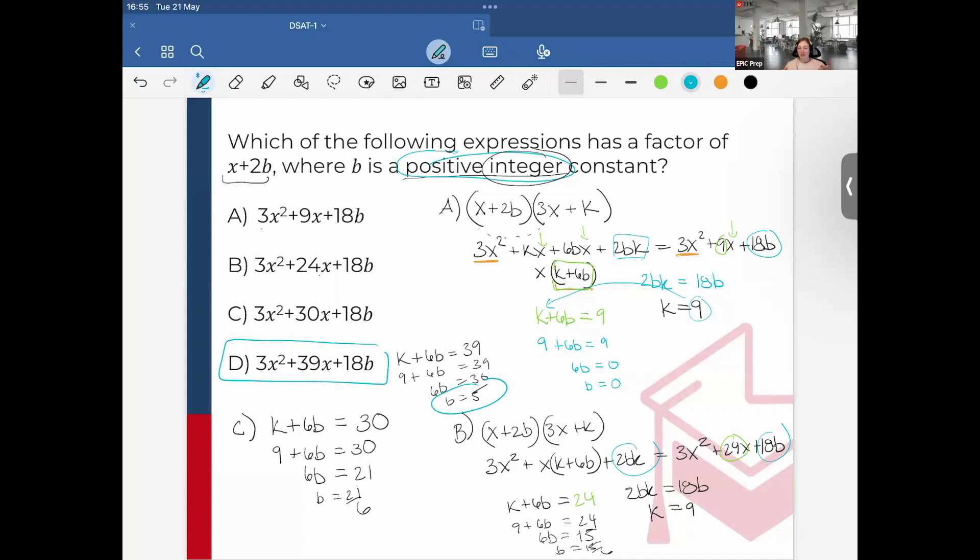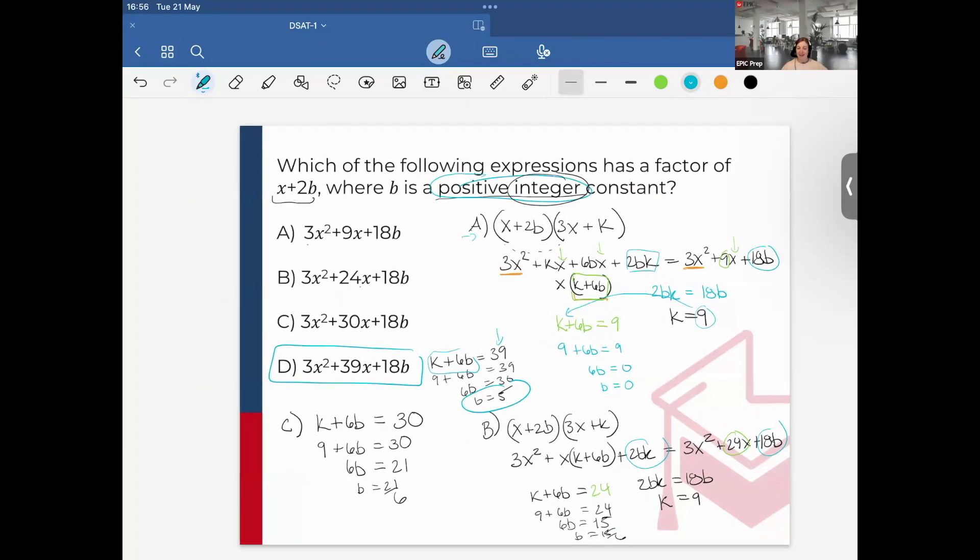But you see, I didn't have to go through everything. Once I recognized the equivalences in answer choice A, I can just take the expression and set them equal to the b value in each of the answer choices to solve, and see which one gives me a positive integer constant.